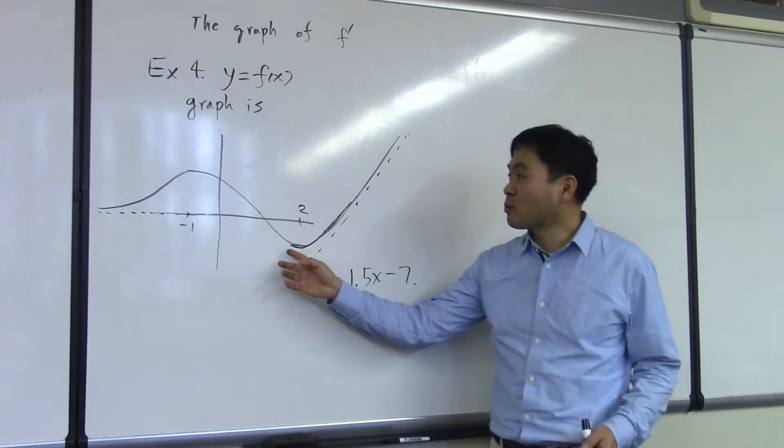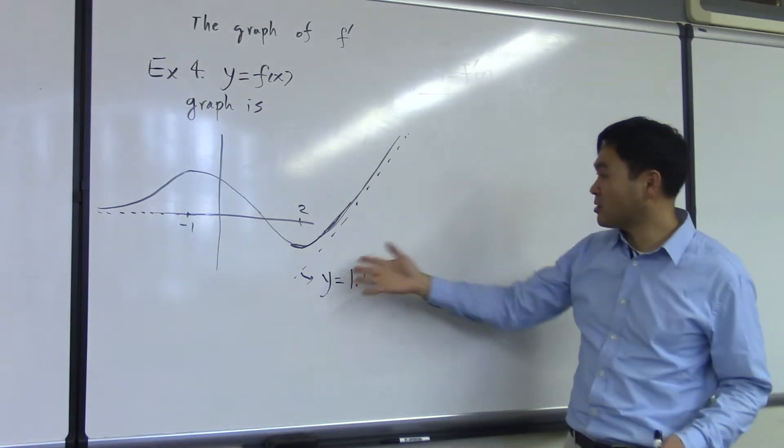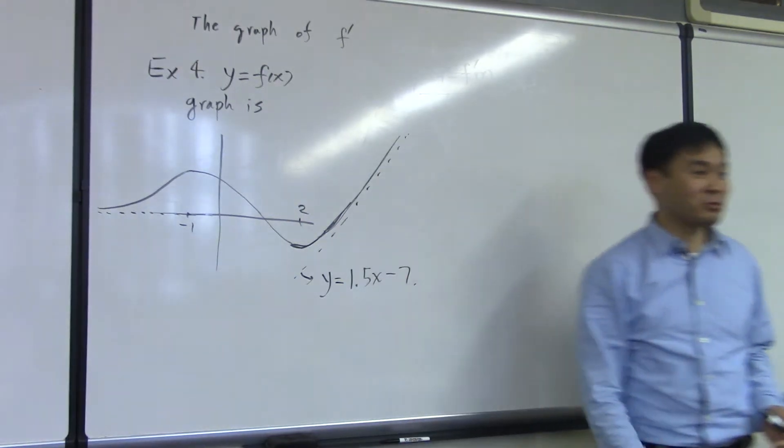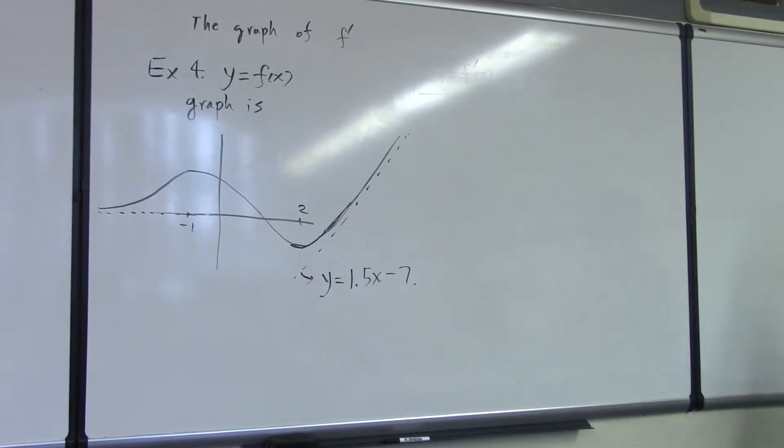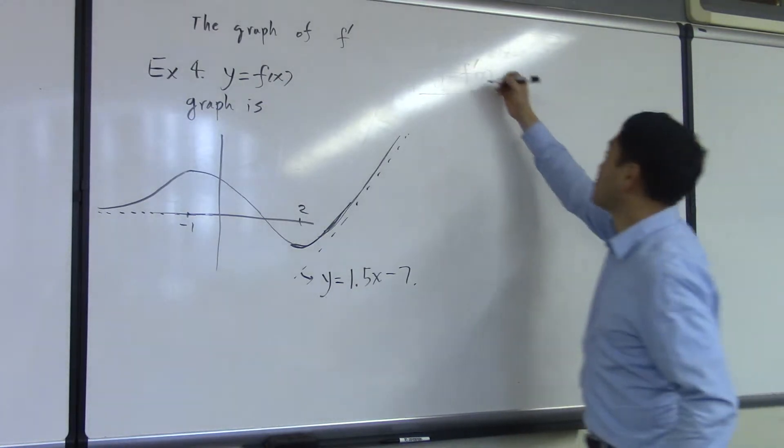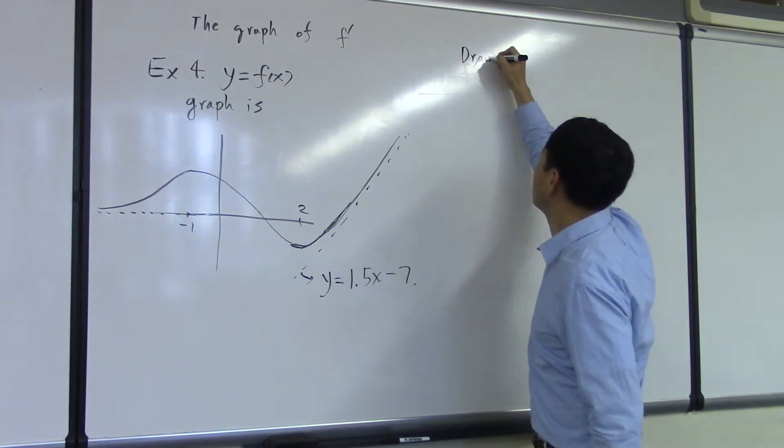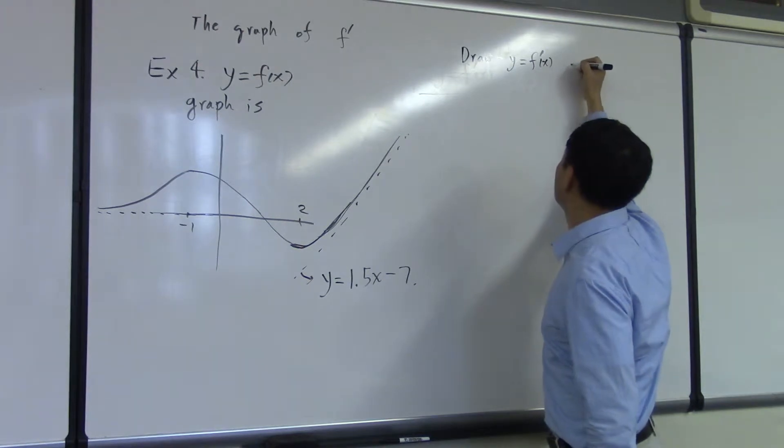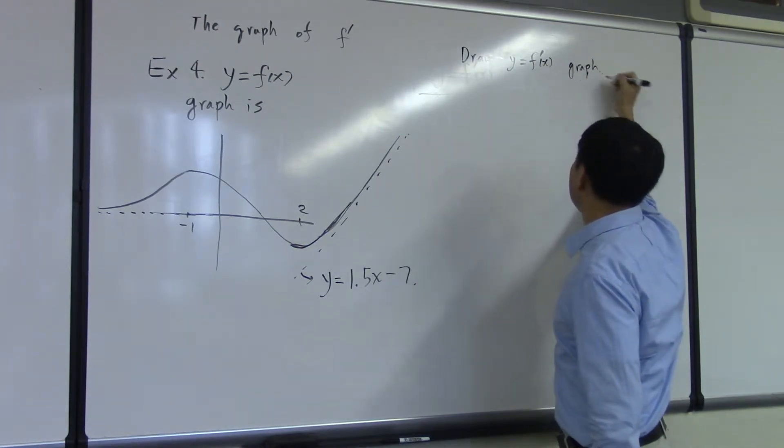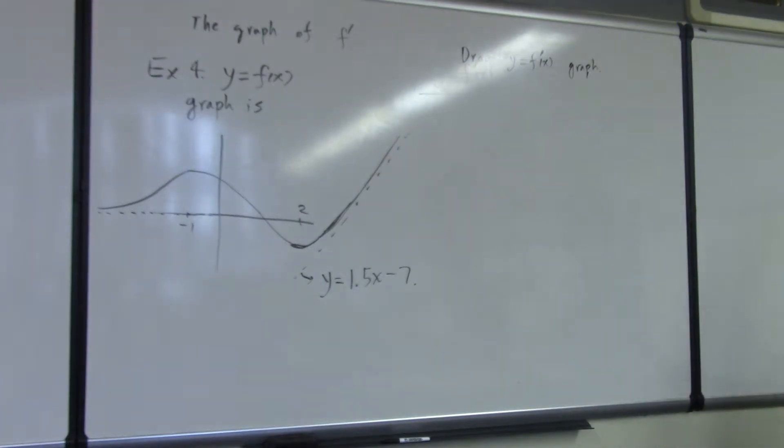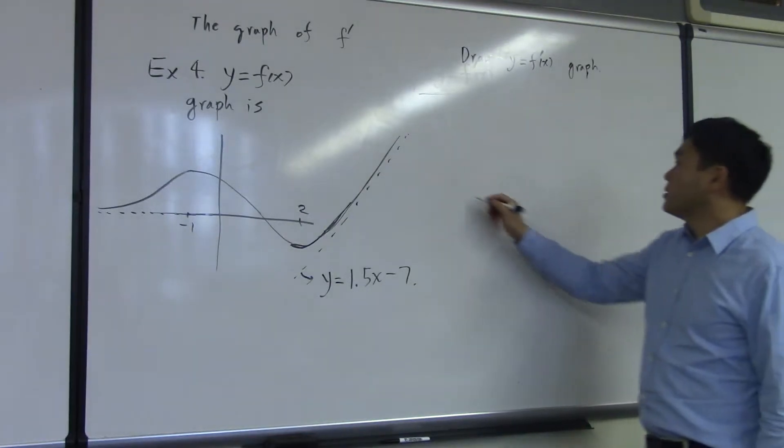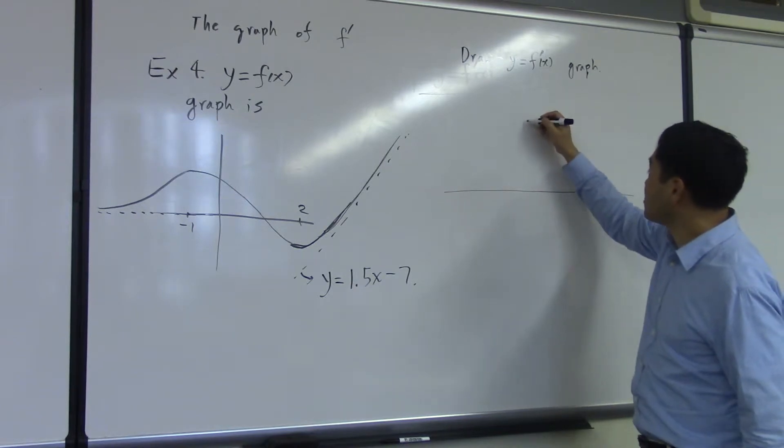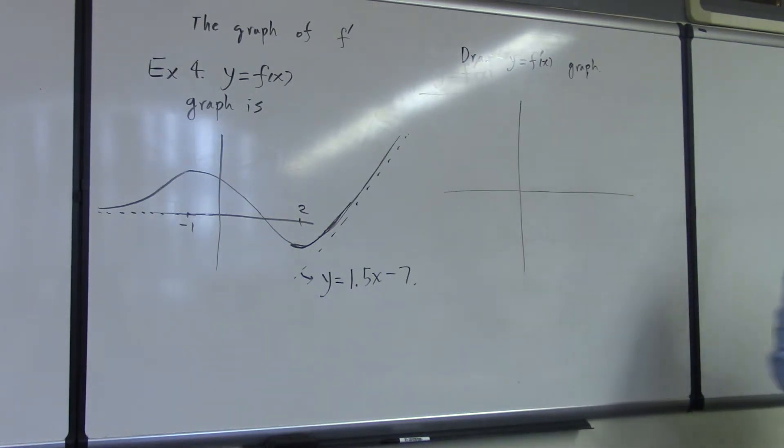So the formula for the function f(x) is not given, but the slanted asymptote formula is given. In that case, how should we draw the graph of f prime of x? To begin, you do the same technique as before. You just identify points where the slope is zero.